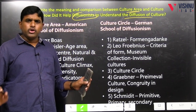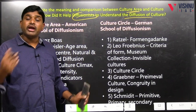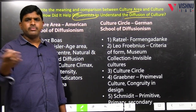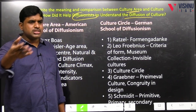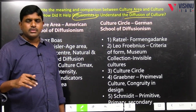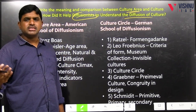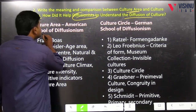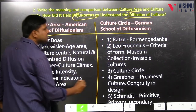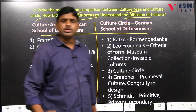I know you cleared prelims, so obviously you know the answer, but how you are writing is important — how you are expressing is important. One of our student's papers I posted; once go through it. Similarly, the toppers' good answers I will be posting. Just compare: culture area — American school of diffusionism; culture circle — German school of diffusionism.